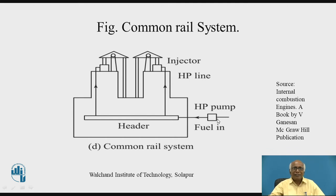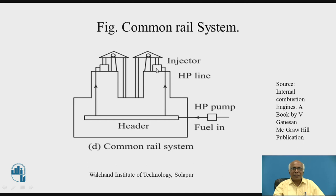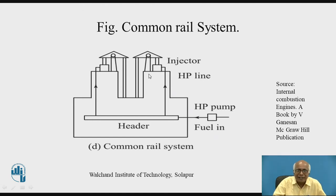Looking at the figure: this is the HP pump. First, the transfer pump supplies fuel from the fuel tank to the HP pump. There is only one common pump, and this header — also called the Common Rail — is through which fuel is supplied to different cylinders from different lines. Here, two cylinders are shown. The injector is separate for each cylinder, operated with the help of a rocker arm and push rods. At the correct time for each cylinder, pressurized fuel is injected inside, and that timing is controlled with the help of the camshaft and rocker arm mechanism.